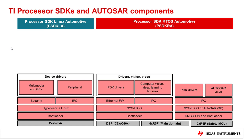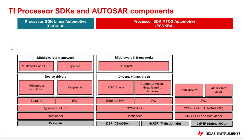AUTOSAR MCAL is also provided on ARM R5F to help develop AUTOSAR applications. To speed up application development on a heterogeneous SoC, the SDK also provides middleware libraries like OpenVX for ADAS applications, OpenGL for graphics, and GStreamer for multimedia. OpenVX runs on RTOS CPUs and allows access to RTOS functions for deep learning, camera, and hardware accelerators from A72. The various middlewares abstract the heterogeneous nature of the SoC and present a unified and simplified view for Linux A72 applications.